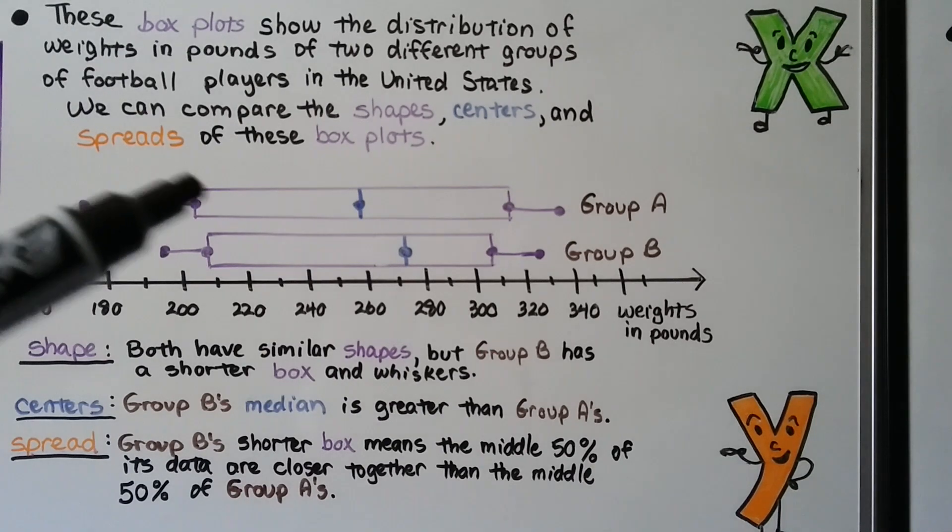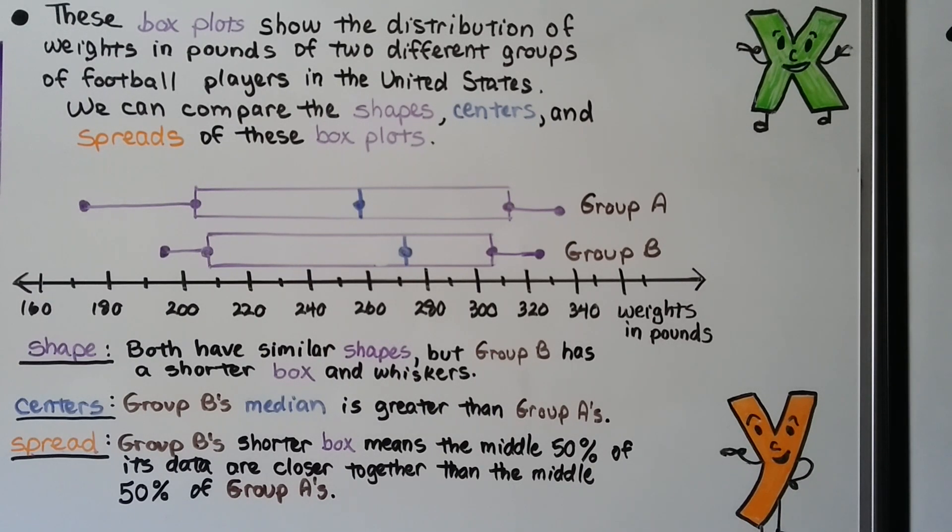Now take a look at these two box plots. These box plots show the distribution of weights in pounds of two different groups of football players in the United States. We can compare the shapes, centers, and spreads of these box plots.